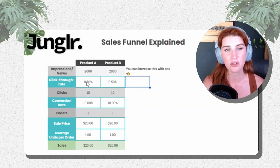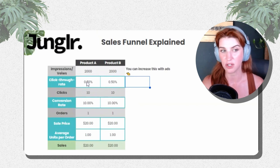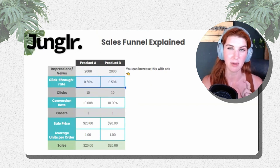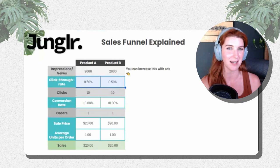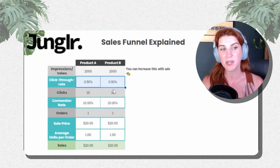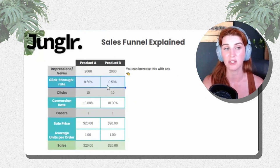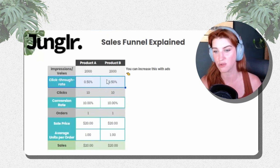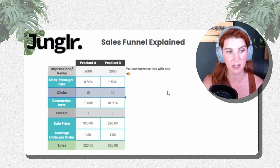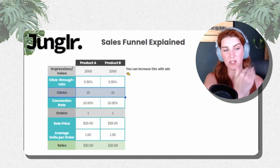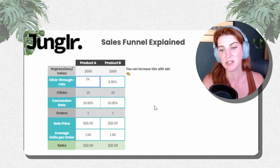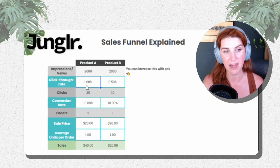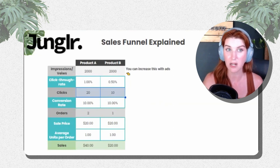Click-through rates aren't super visible in organic searches, but you can see them more clearly in your ads. Ads are a really good place to start when trying to get an idea of your click-through rate. You can also use a Search Query Report to calculate click-through rates on individual search queries. The number of views multiplied by the click-through rate determines the number of clicks. If I double my click-through rate from 0.5% to 1%, my clicks essentially double.